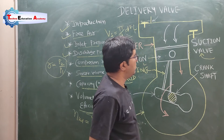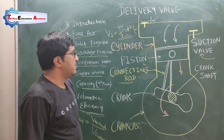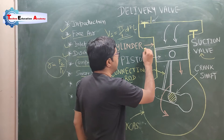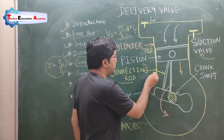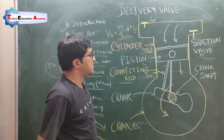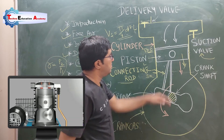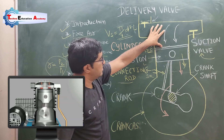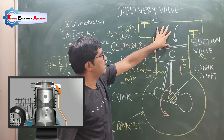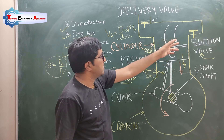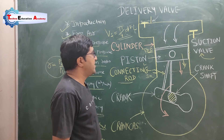Now the working principle: TDC is the topmost position of the piston inside the cylinder and BDC is the bottommost position (reference line). Whenever the piston travels in the downward direction from TDC to BDC, the volume inside the cylinder increases and the pressure decreases, so a negative pressure (low pressure) is generated inside the cylinder.